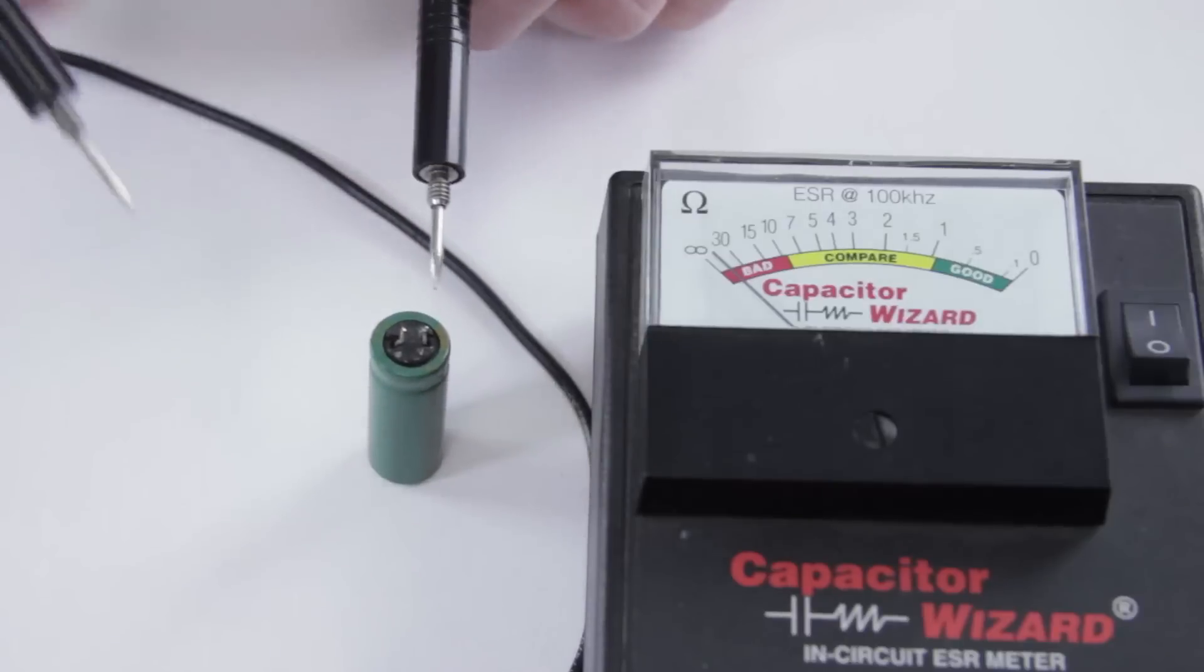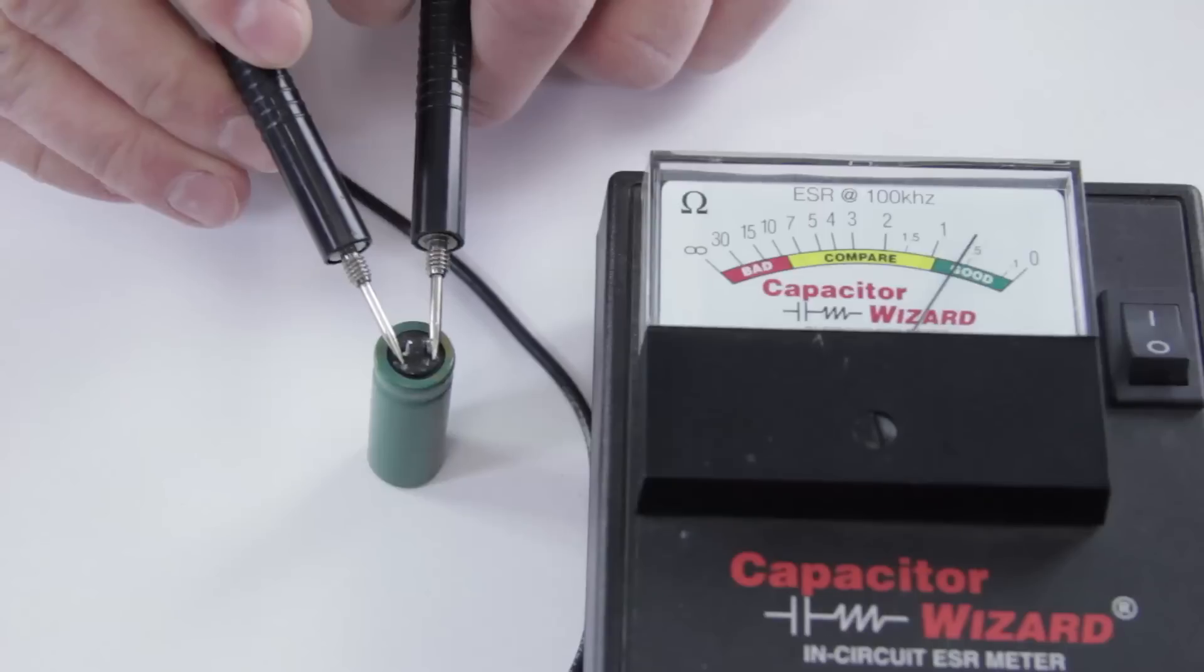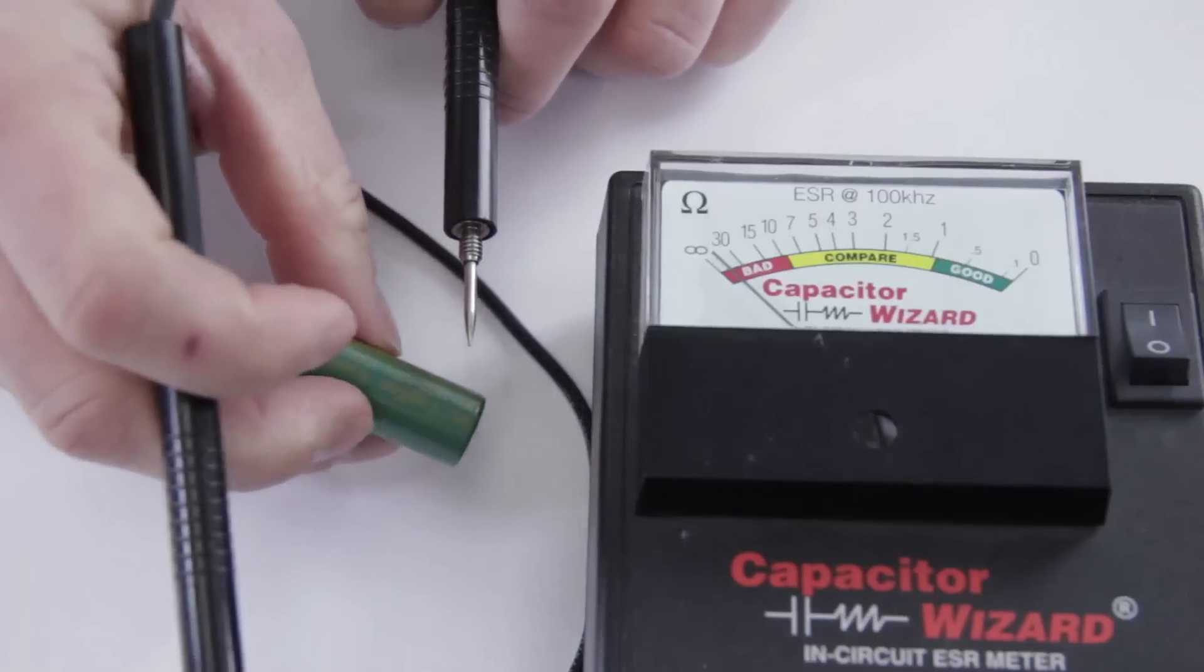A bad one on the other hand, this is our puffy one from earlier, shows only that it's just good and doesn't beep at us. This one we know is bad because it has the puffy top.